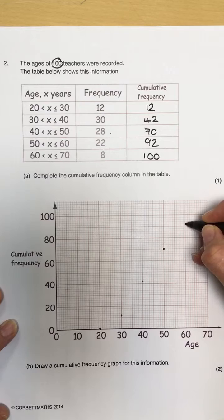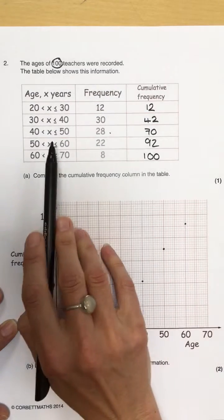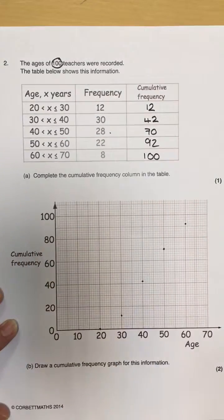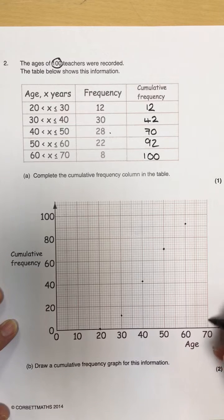60, and that's 90, so 92. And the last one, 60 to 70 is 100. So, when it goes to 70, it's at 100.